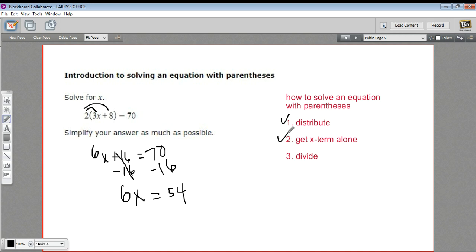All right, so we got the x term alone. Now we need to divide. The reason we need to divide is because this 6 is multiplied by x, and we need to undo that by doing the opposite. The opposite of multiplication is division. So we divide by whatever this number is.